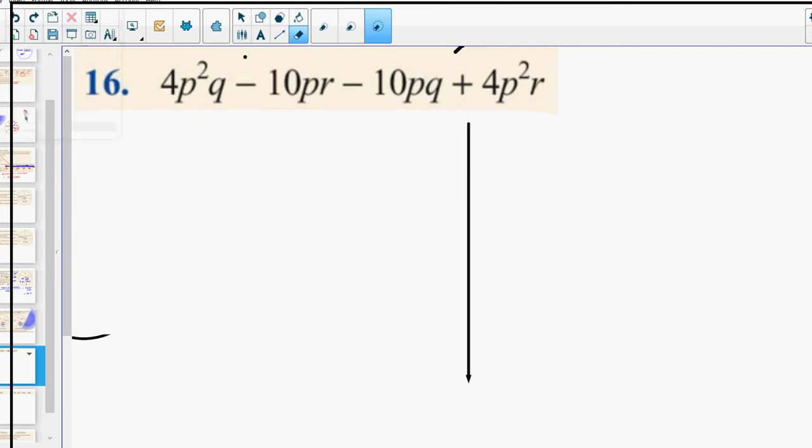All right, guys. So, this one here, what I'd say, the first thing we can do is we can take out, is there a letter that's in everything? P. Is there a number that will divide into all the numbers? Two. Two P. So, what's going to be left over here? Two PQ. After that. Minus five R. Minus five Q. And then here. Plus two PR.